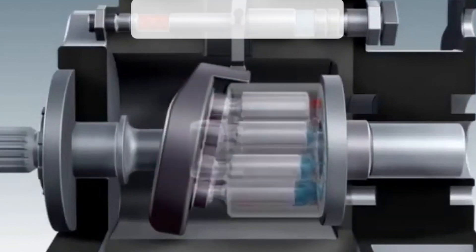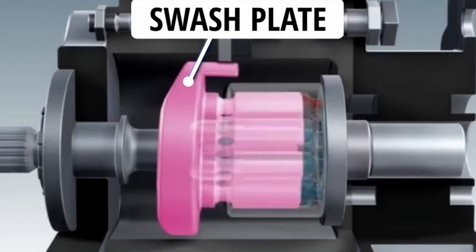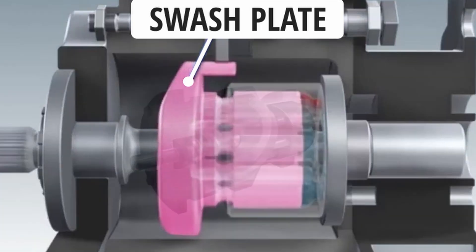The interesting part of this pump is the swash plate. It's a device used to translate a motion of a rotating shaft into the stroking motion of a piston.